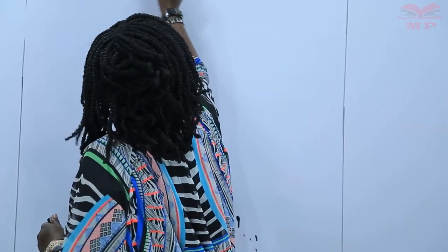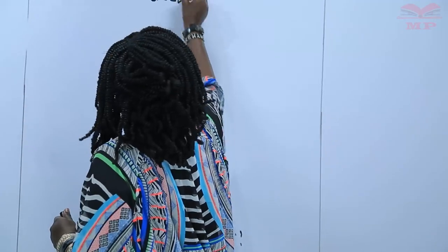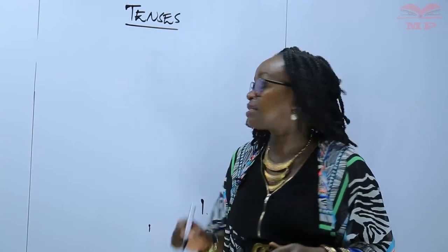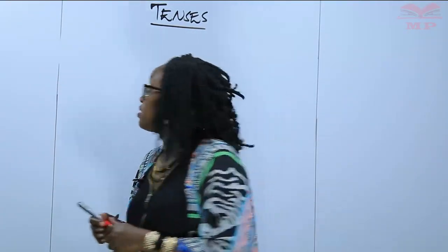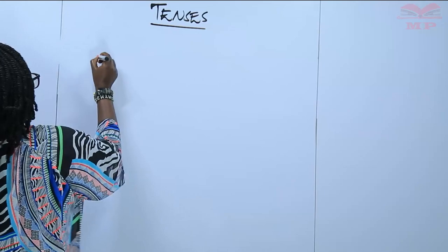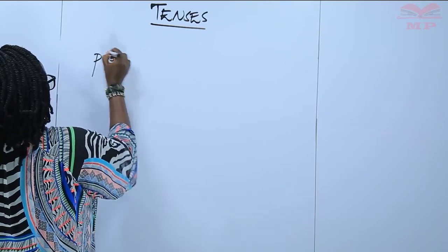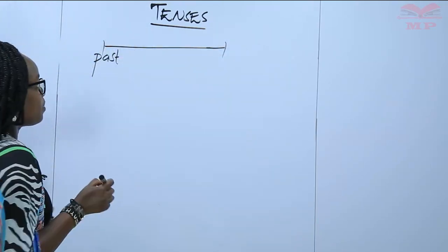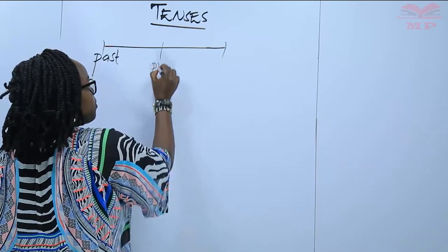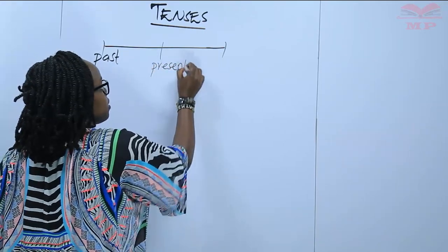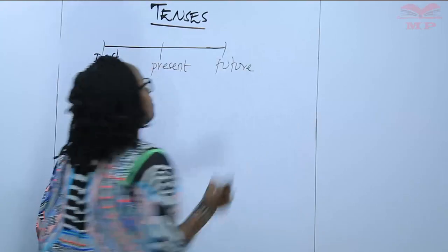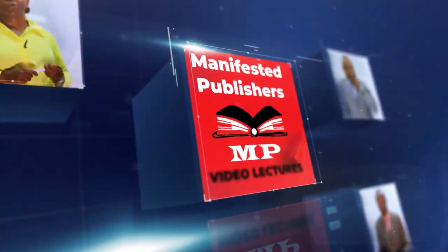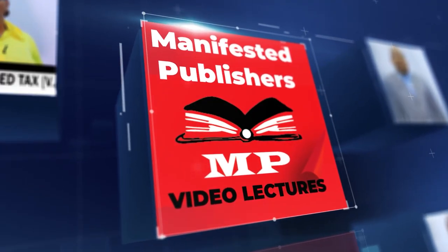First I will begin with talking about the tenses in general before we narrow down to the simple present tense. In English we have three times. I'm going to use a line to try and explain better. We have the past, then at the center we have the present, and then we have the future time. It is these times that actually dictate the tenses. Thank you very much for joining us.